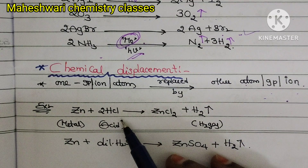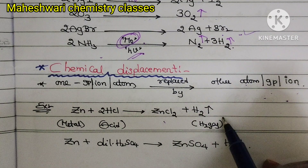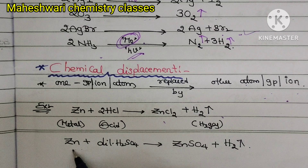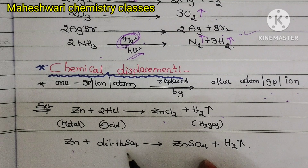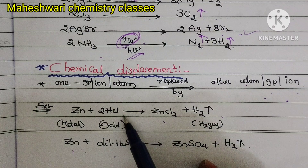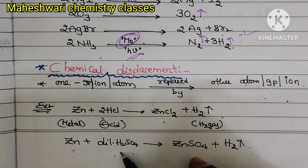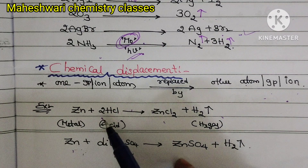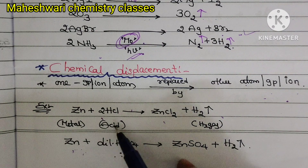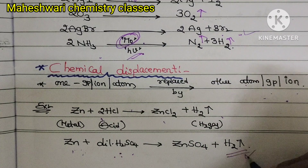Zinc reacts with hydrochloric acid and gives zinc chloride and hydrogen gas. When zinc reacts with dilute sulfuric acid — note that one is hydrochloric acid and the other is sulfuric acid — both are acids. Zinc is a metal, and when a metal reacts with acid, it gives hydrogen gas.